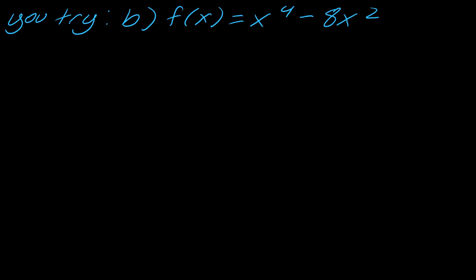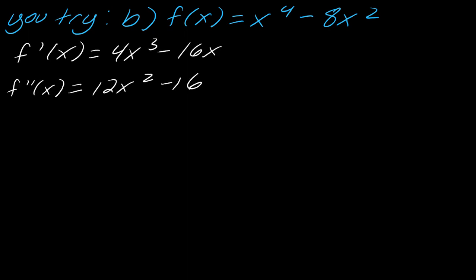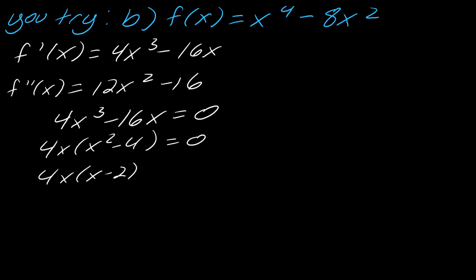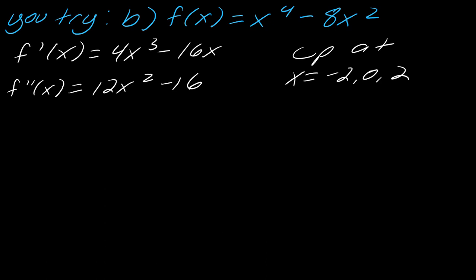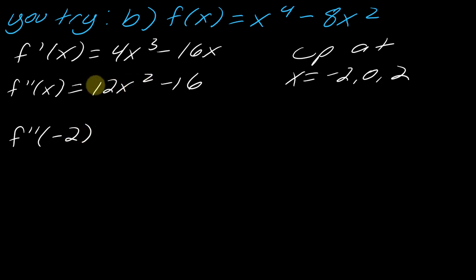Now pause and try the second example on your own using the second derivative test. First I write out the first and second derivatives. The first derivative is never undefined, so I set it equal to zero and solve, giving the critical points x equals negative 2, 0, and 2.